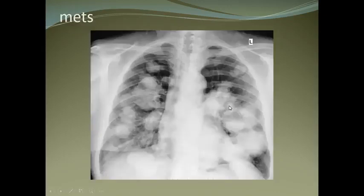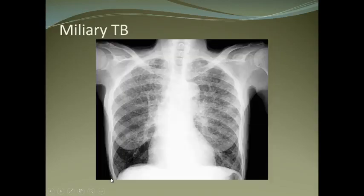Hampton's hump is a peripheral triangular wedge-shaped opacity usually seen in pulmonary embolism. Multiple metastases appear as cannonball tissue densities in bilateral lung fields. In TB, you can see multiple tiny sub-centimeter nodules scattered throughout both lung fields — miliary TB is very common in our society.